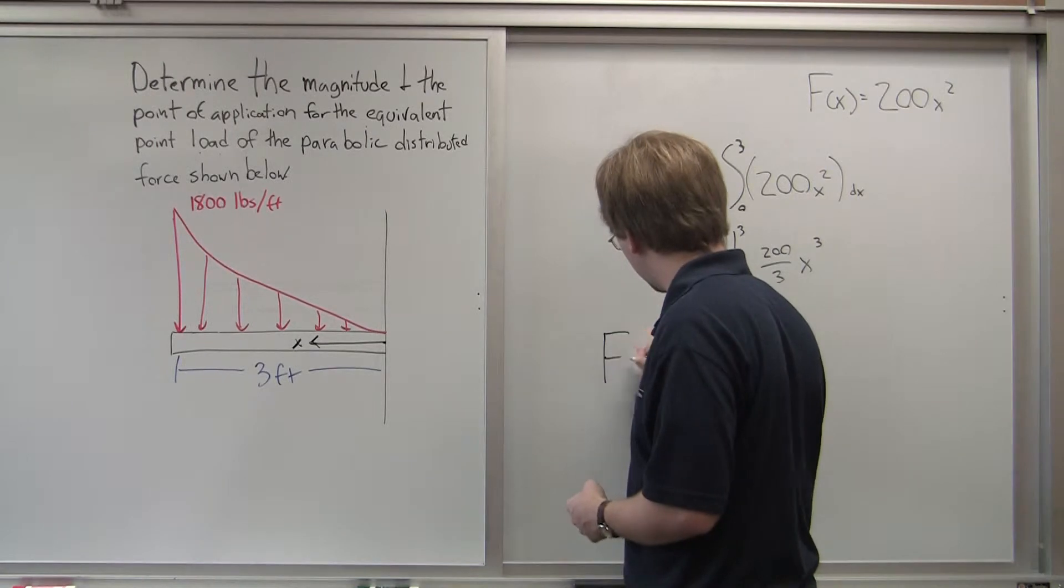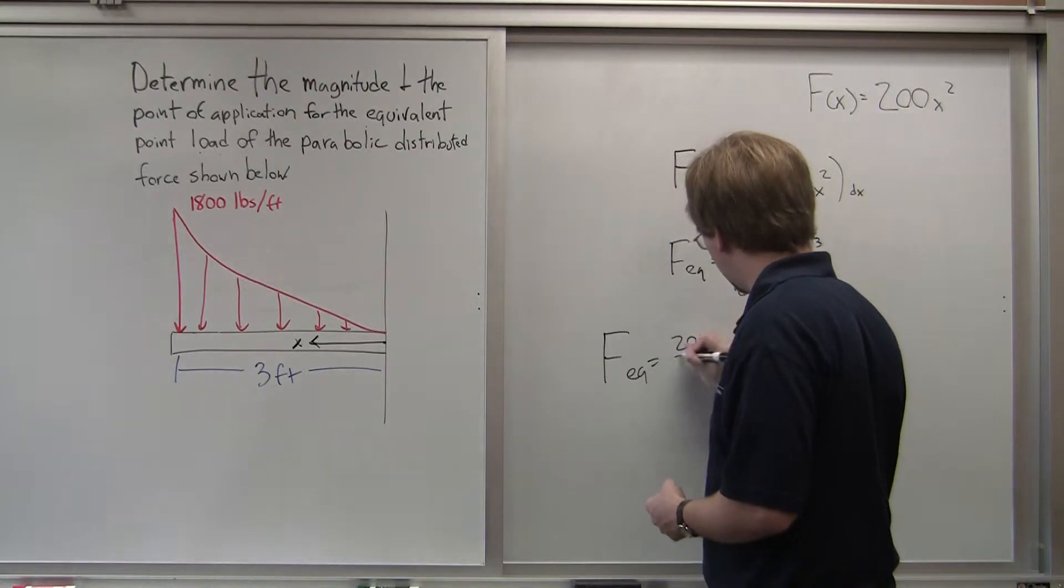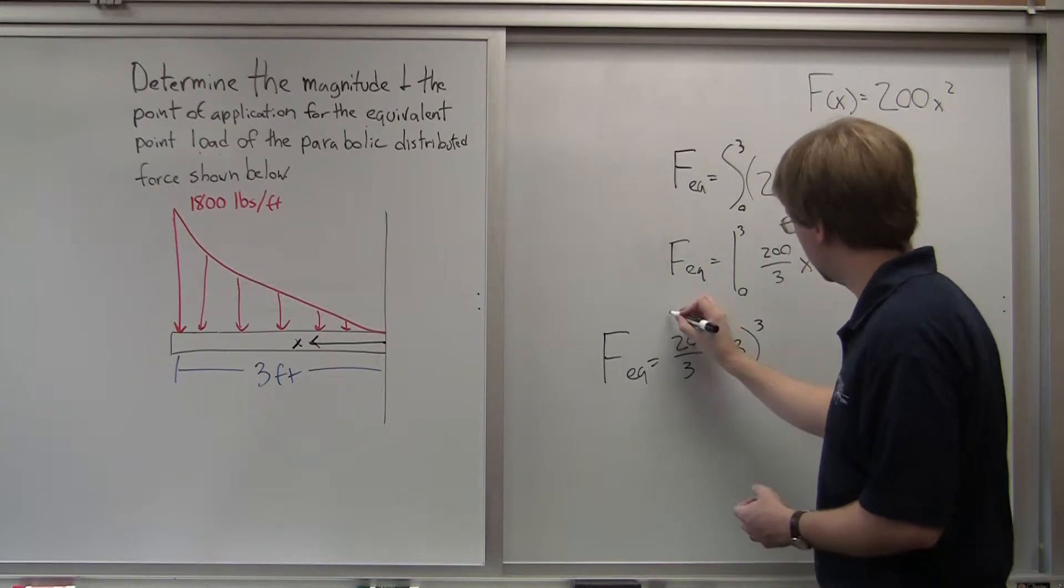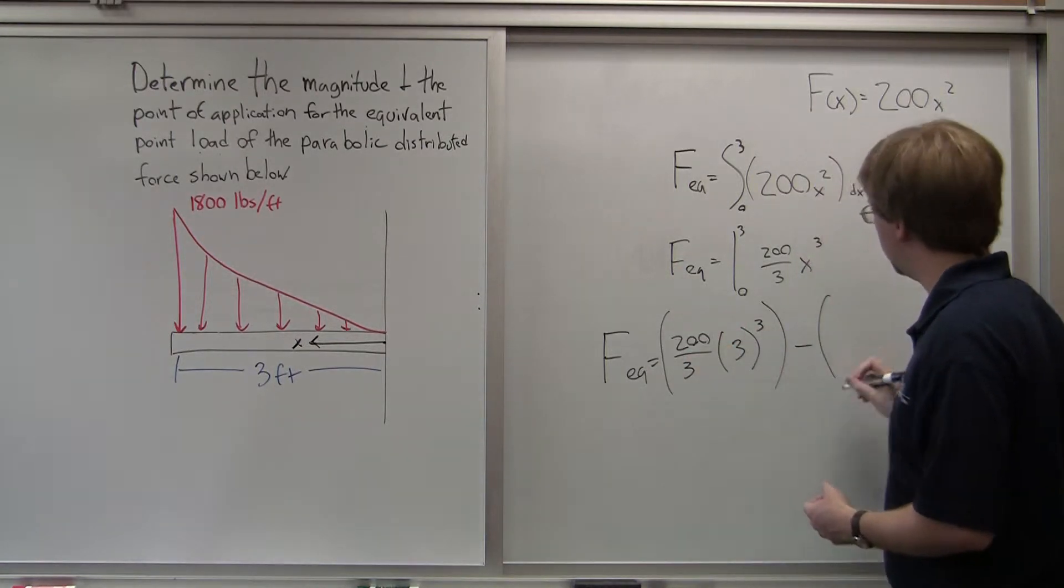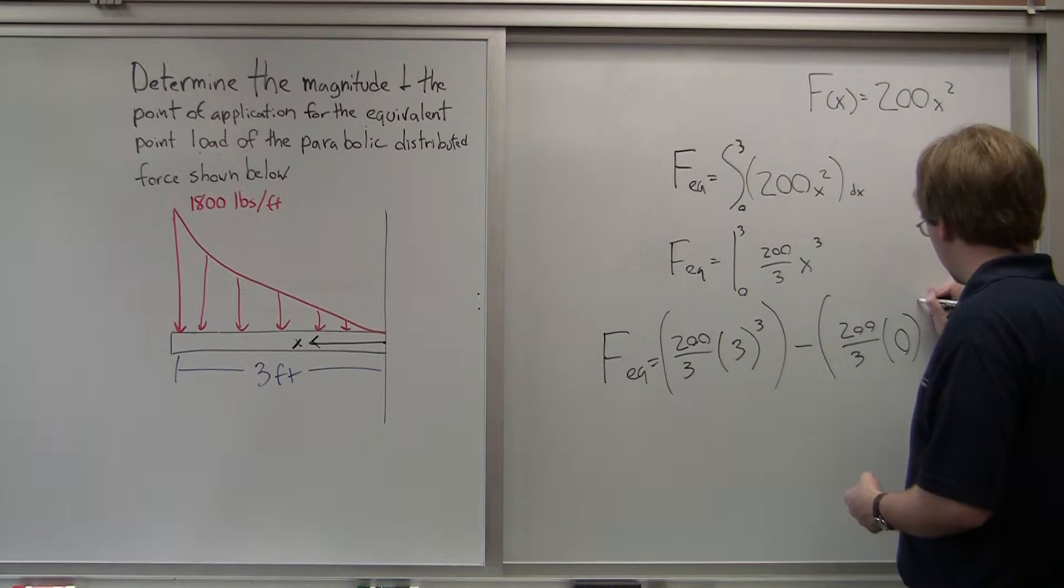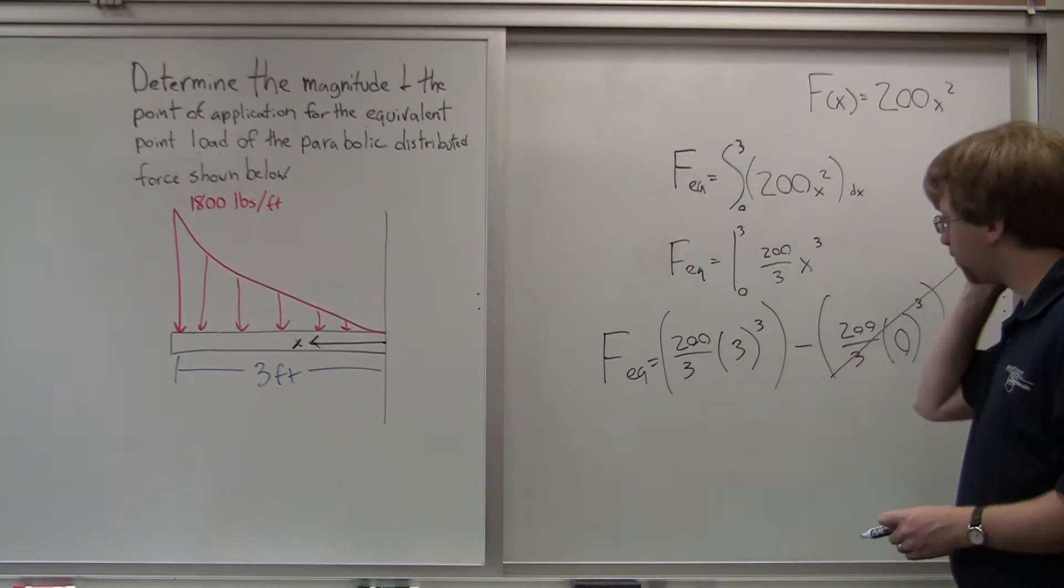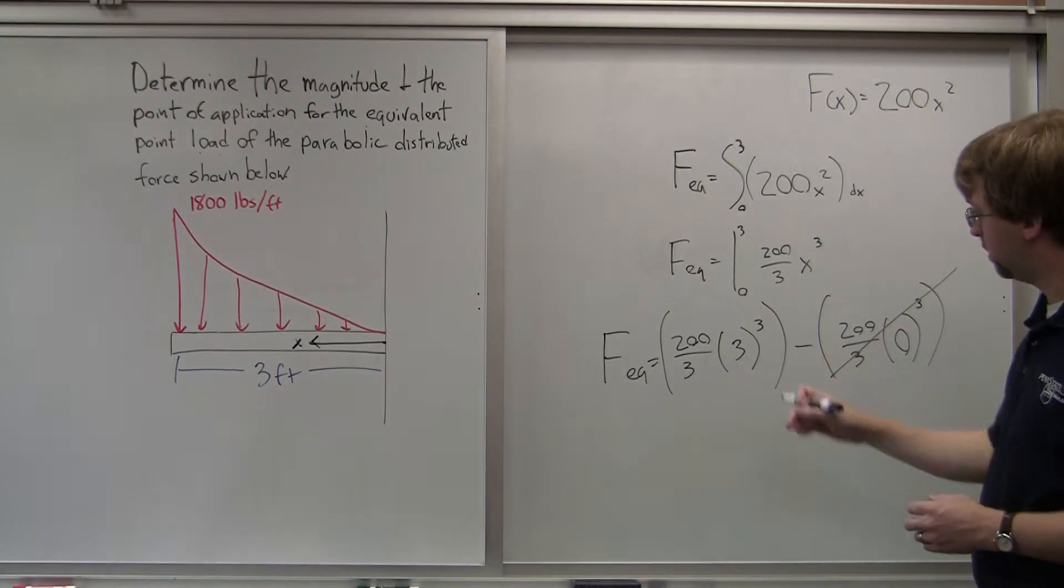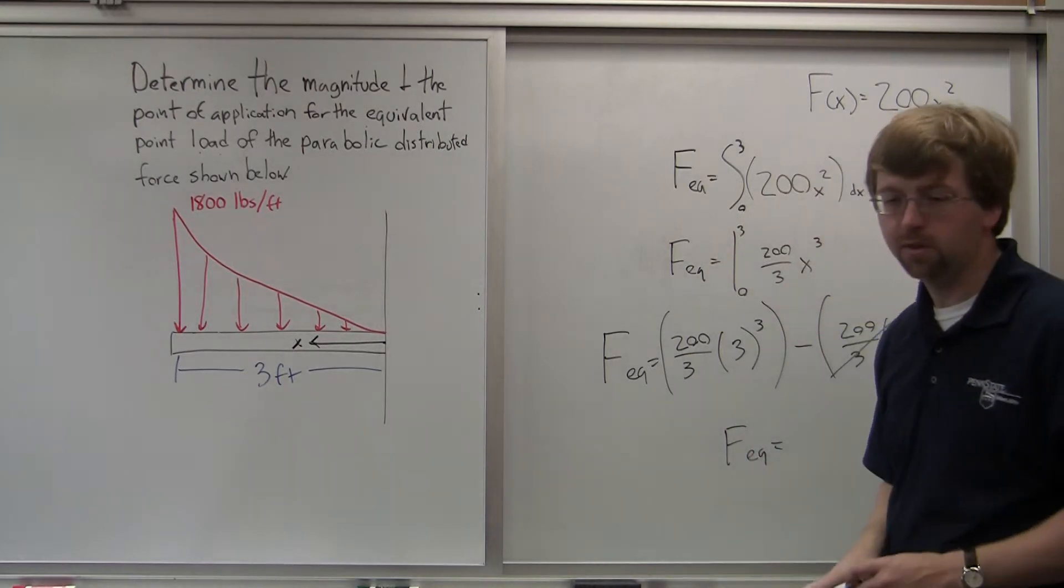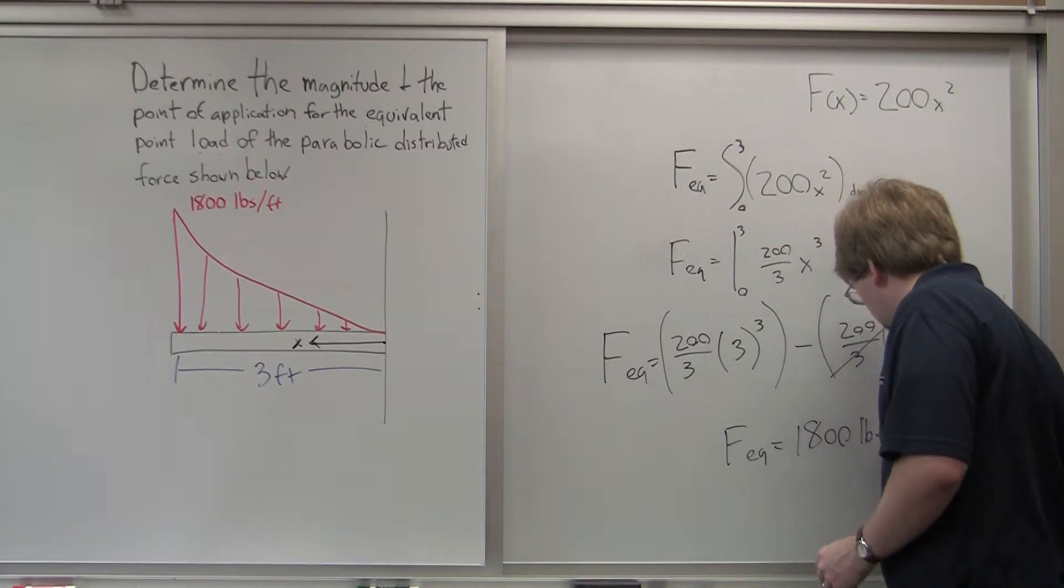So f e q is going to be equal to 200 thirds times 3 cubed minus 200 thirds times 0 cubed. So this one here, 0 cubed is just 0. So we have, we're going to have simply the value at 3. So f e q, if I solve this out, this gives me a value of 1800 pounds.